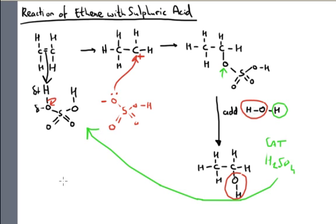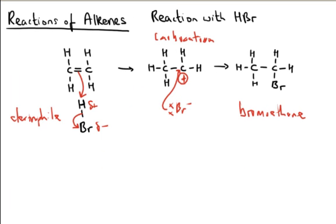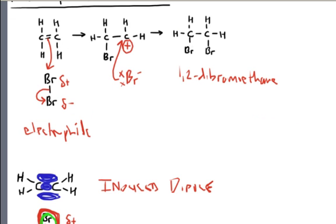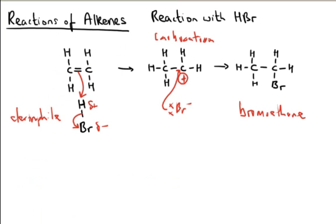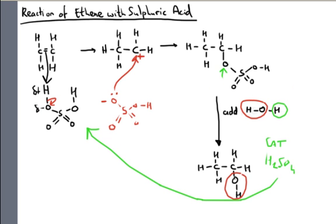So those are the three reactions of ethene: with bromine, which is actually a test for an alkene — it goes from brown to colourless; a reaction with hydrogen bromide; and the reaction with sulphuric acid in the production of ethanol. That's awesome. Thank you.